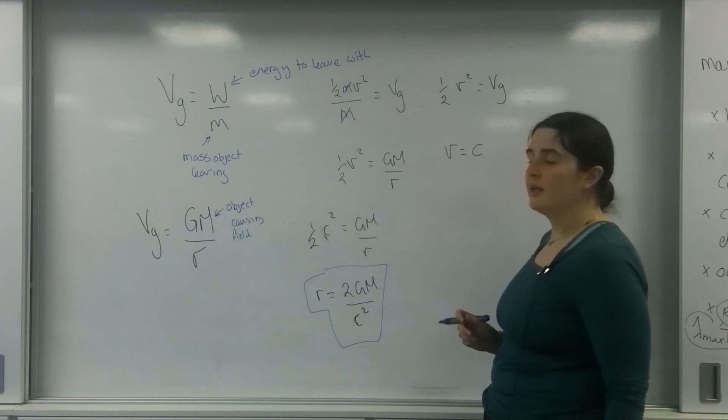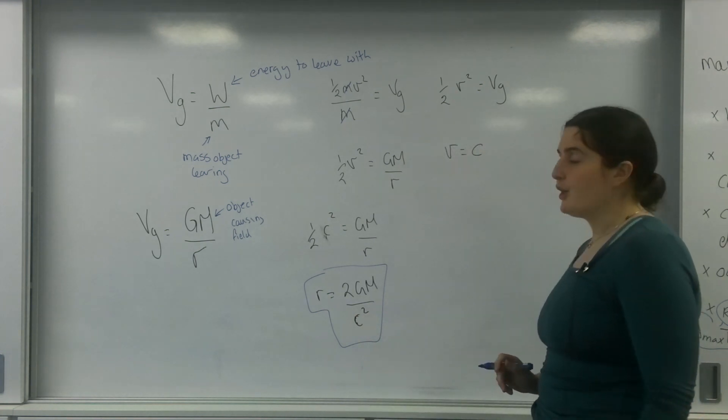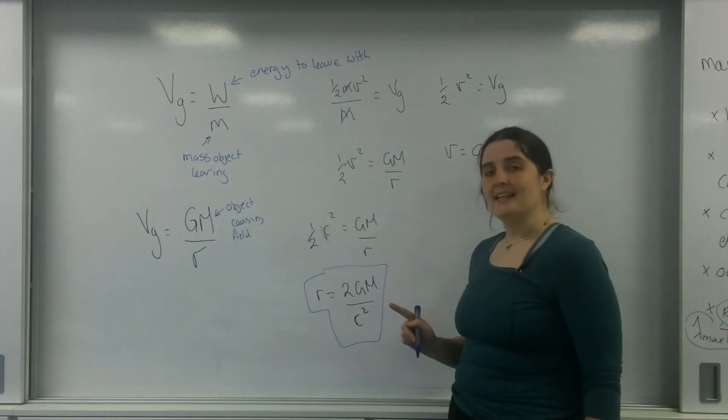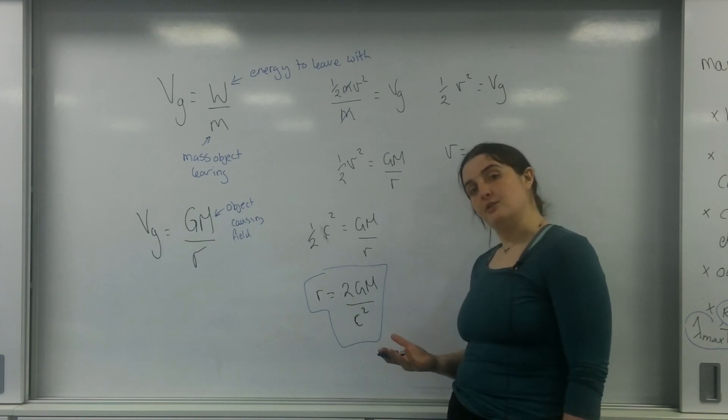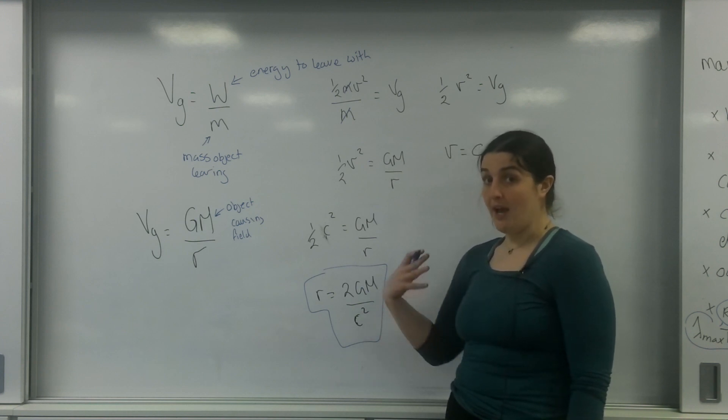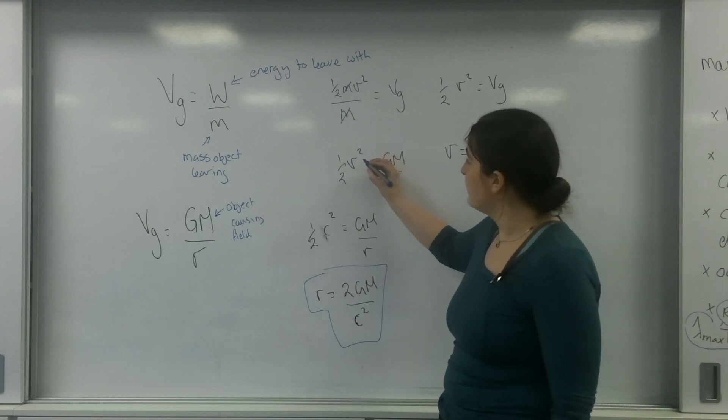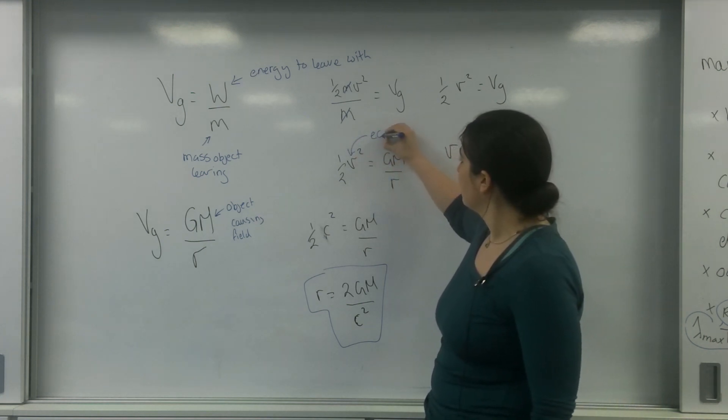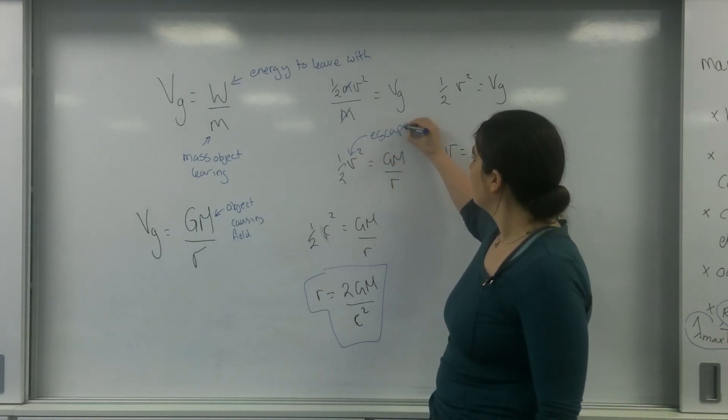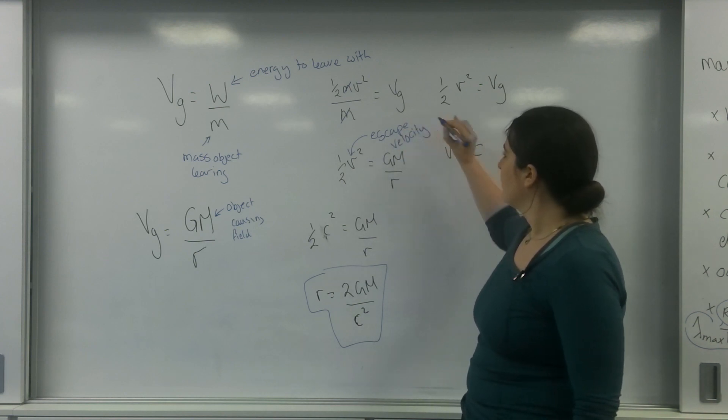But this is actually quite a useful formula to know, because technically the formula for escape velocity isn't on your data sheet, but this is. So you can actually use this in gravitational field for escape velocity. So this v here is the escape velocity.